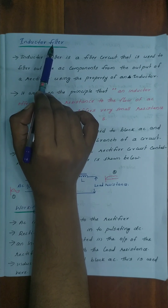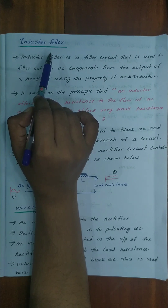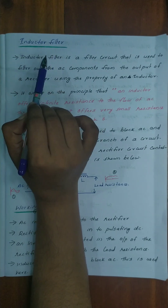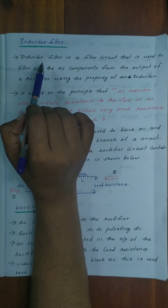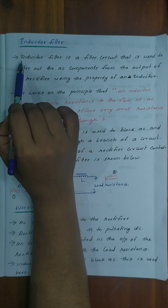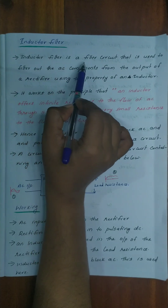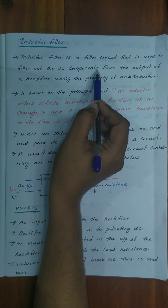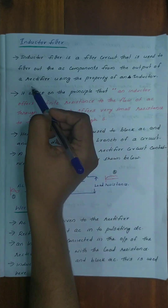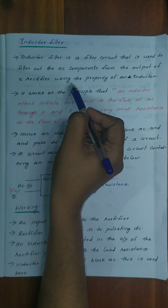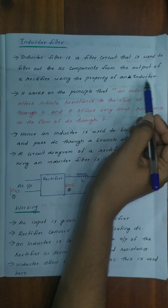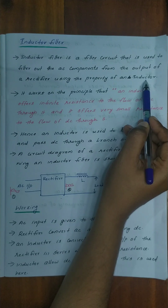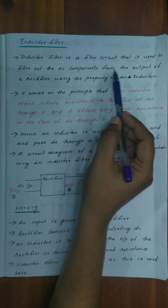We have two types of filter circuits: the capacitance filter and the inductor filter. An inductor filter is a filter circuit that is used to filter out the AC components from the output of a rectifier using the property of an inductor.